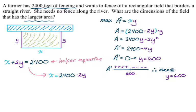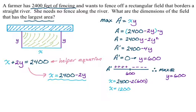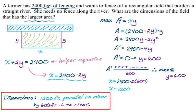I got y equals 600. I need the actual dimensions though, so I use the helper equation to find x: x equals 2400 minus 2 times 600, which means x equals 1200. Answering the question: the dimensions are 1200 feet parallel to the river by 600 feet perpendicular to the river. Those are the dimensions that give the largest area.